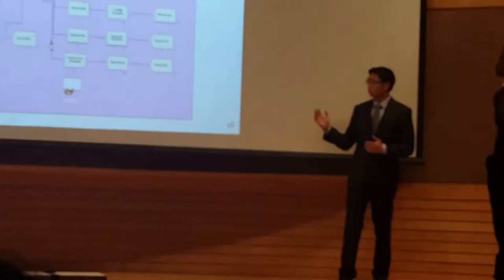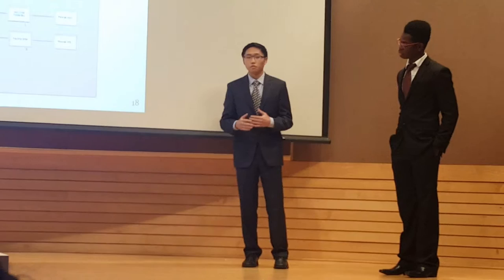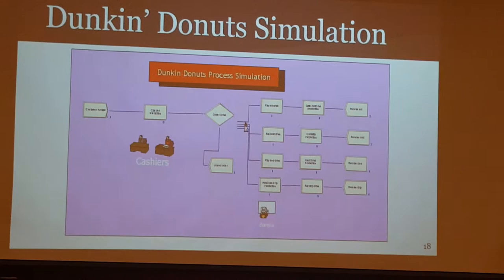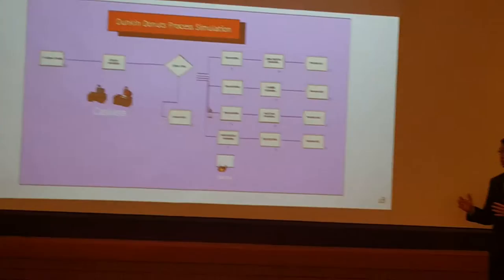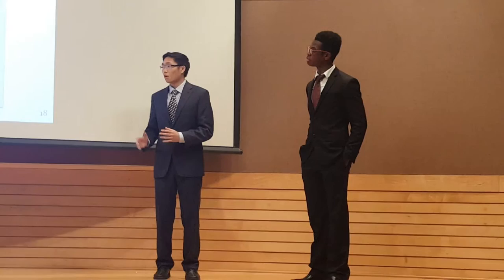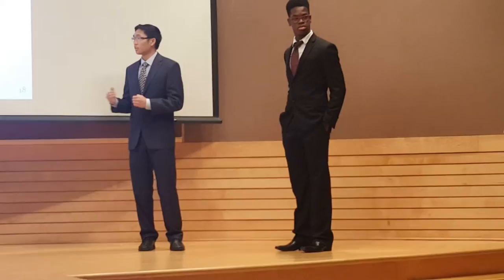This is our Dunkin' Donuts simulation. Customers enter the simulation on the far left, following arrival times from a distribution called a Poisson process. As they move on, they make their drink order, which gets separated into four different processes depending on which drink order they choose. Furthermore, the payment process is different at Dunkin' Donuts depending on which drink order is made — customers may pay before or after the drink is made. We actually modeled the production processes of those individual drinks using data analyzed in Minitab, giving us an accurate representation of those firm operations.